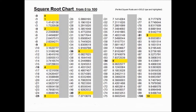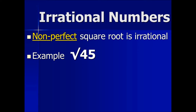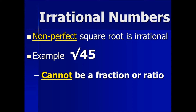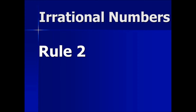Let's pick the square root of 45 as an example. By definition, the square root of 45, when evaluated, cannot be made into a fraction or ratio. And in decimal form, it never ends and never repeats.